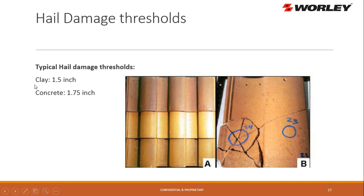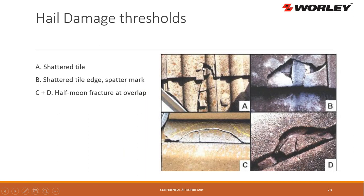When talking about hail damage, it takes about an inch and a half to break clay tile and an inch and three-quarters to break concrete. It's going to look more like a circular shape — almost like a piece of pie cut — with a point of impact and breaks radiating outward, leaving a crescent shape. When hail hits edges, you'll see a moon shape. Also look for spatter marks and half-moon shapes — this is typical identification for hail.